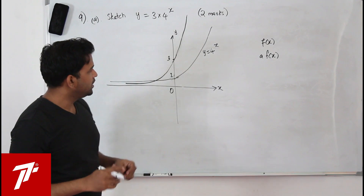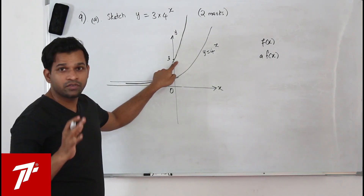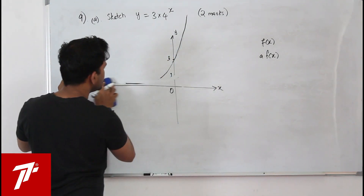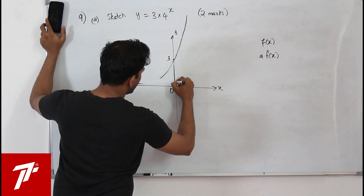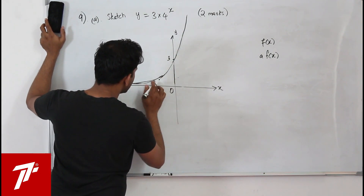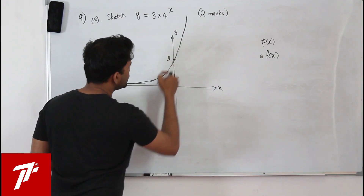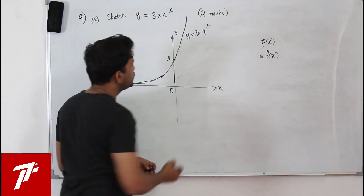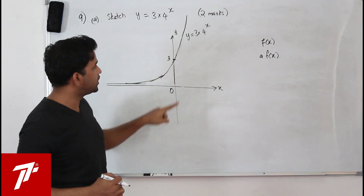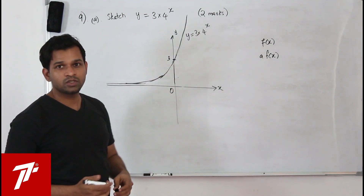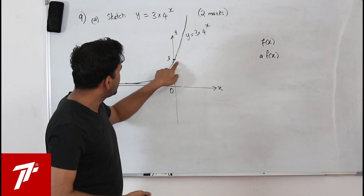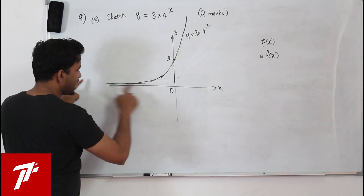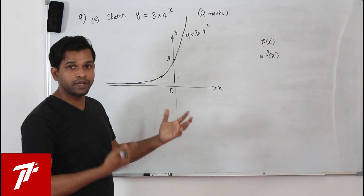Don't worry about the curve — they need the point of intersection only. Just draw an exponential curve and make sure it doesn't touch the x-axis. The point of intersection you need to show very clearly is 3. Always label the graph — make it a practice — label it 3 times 4 to the power x. This point of intersection is very important; the question has 2 marks. This curve will never touch the x-axis because the x-axis is the asymptote of the exponential curve.